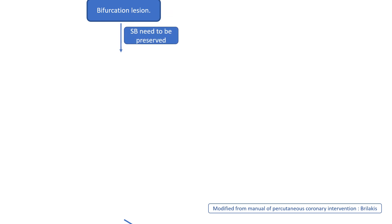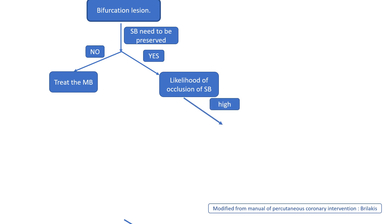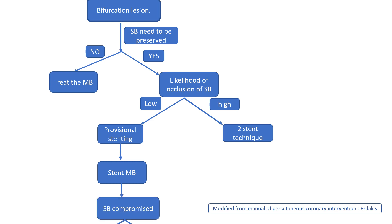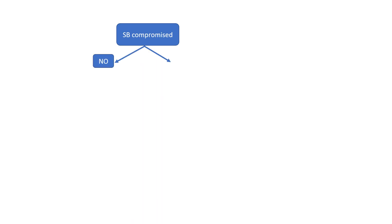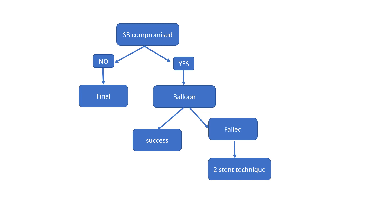In summary, whenever you face a bifurcation lesion, a few questions must be answered. First, does the side branch need to be preserved? If not, treat the main branch only. If yes, assess the likelihood of side branch occlusion. If the likelihood is high, choose a two-stent technique from the beginning. If the likelihood is low, go for provisional stenting — stenting the main branch with wire protection of the side branch. After stenting, if the side branch is not compromised, the case is finished. If it is compromised, perform balloon angioplasty. If successful, the case is finished; if it fails, a two-stent technique is used. Thank you.